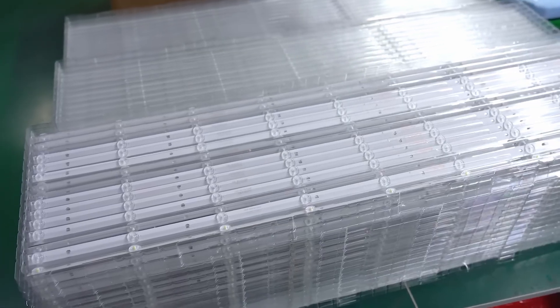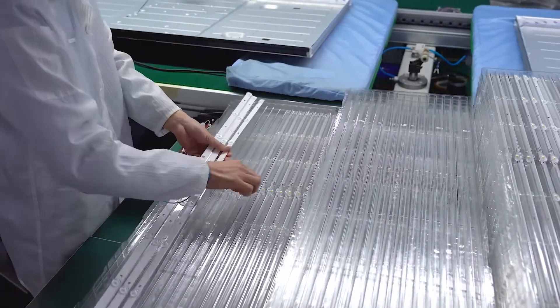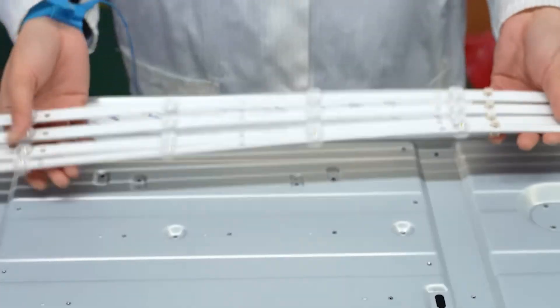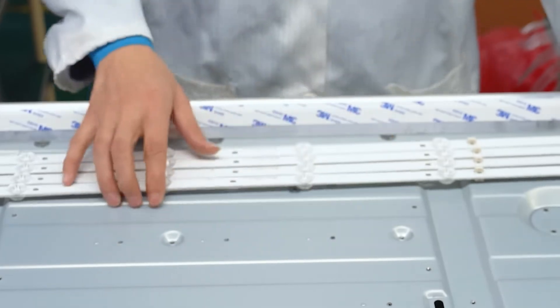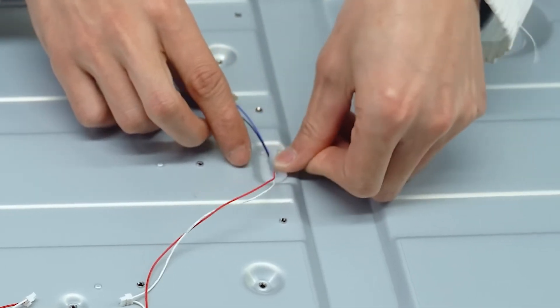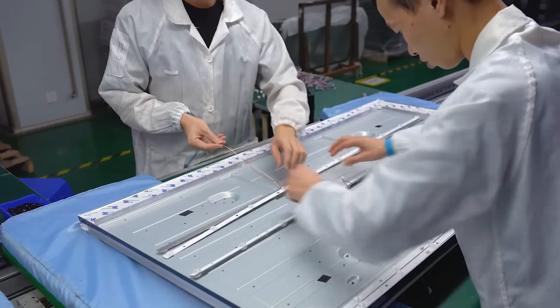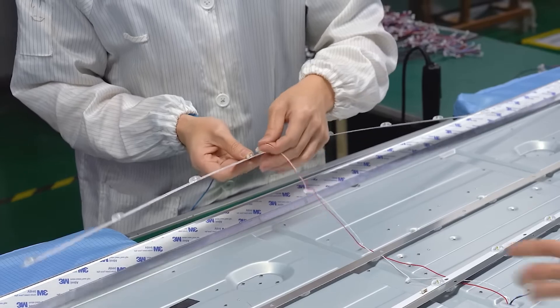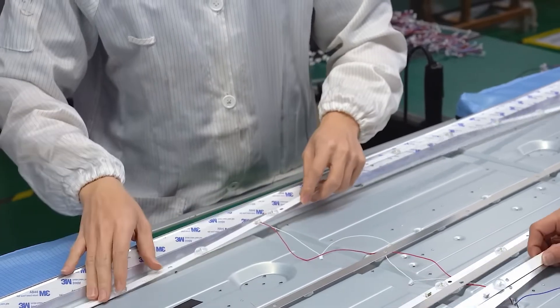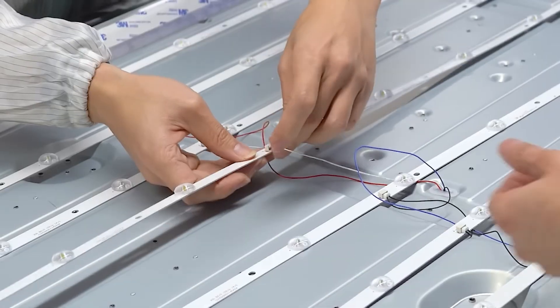The LED chips are then assembled into backlight units. These units can take various forms, such as edge-lit or direct-lit configurations, depending on the design of the TV. In edge-lit designs, the LEDs are placed along the edges of the screen, with light guides directing the light across the display. In direct-lit designs, LEDs are placed directly behind the screen, providing more uniform brightness.